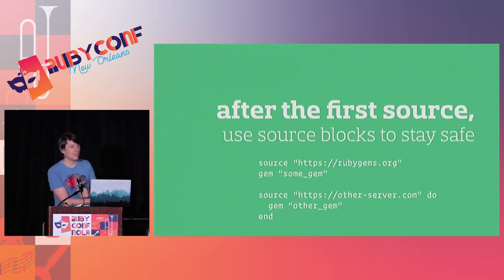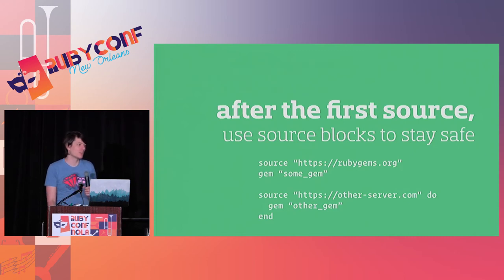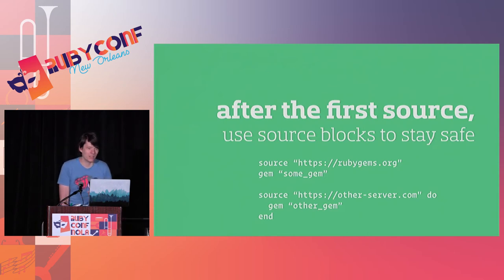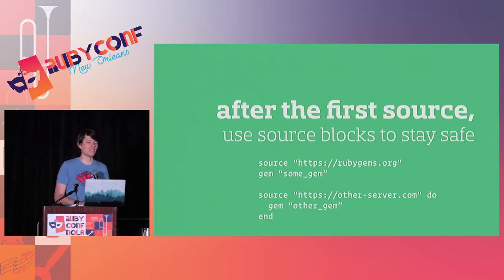To avoid that, use the block form of source — say 'source something do' with some gems after the first source, and you'll get the gems from the source you expect. You can read more about it if this alarms you and you use multiple sources.